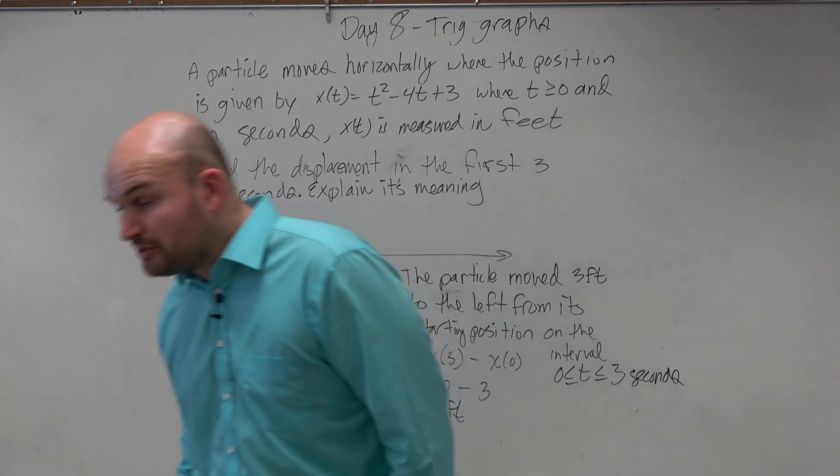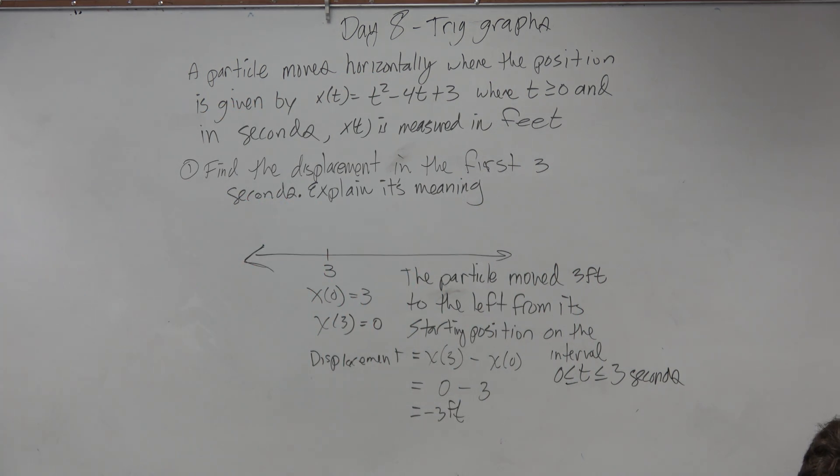And then add in seconds. That would be the most descriptive, including that interval on there because that's really what you're talking about. You're saying, on this interval, the displacement, the particle moved 3 feet to the left because that's negative on that interval. So that would be the most complete way to describe what was happening.